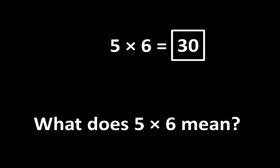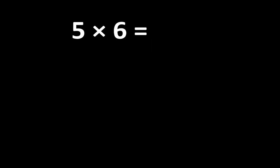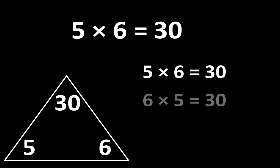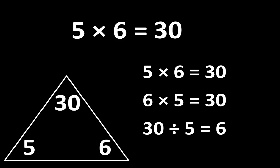In this video, let's take a close look at both of these ideas. 5 x 6 is equal to 30. Let's examine some ways that 5, 6, and 30 are related to each other. To begin, if 5 x 6 is equal to 30, then 6 x 5 is also equal to 30. And since multiplication is related to division, we also know that 30 divided by 5 is equal to 6.